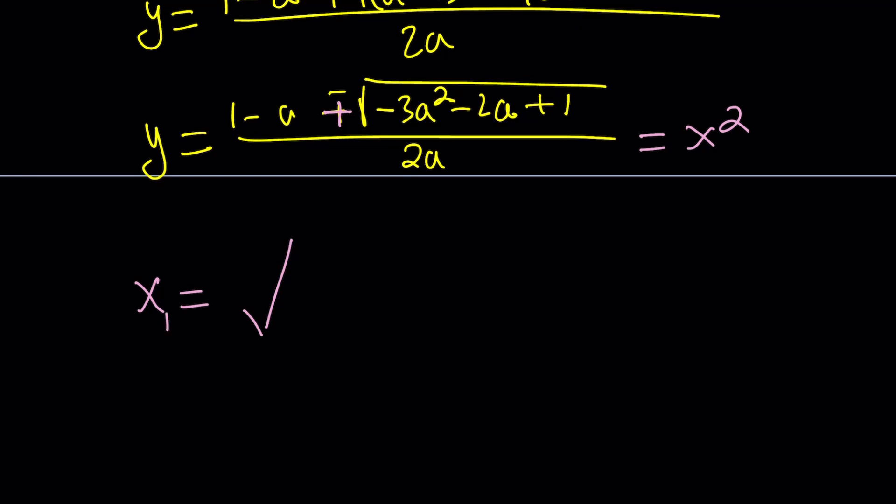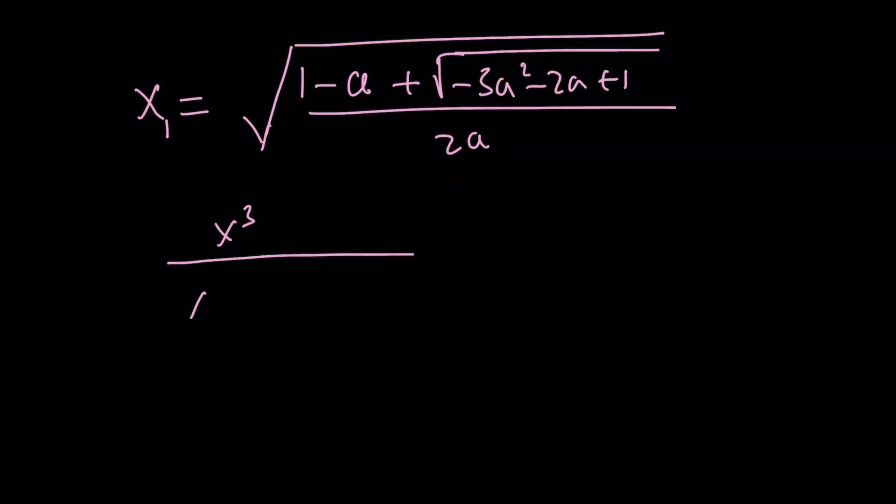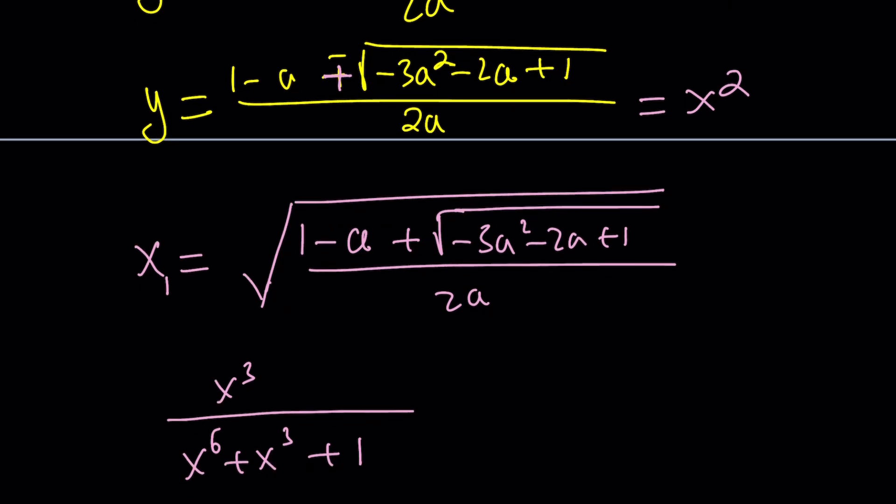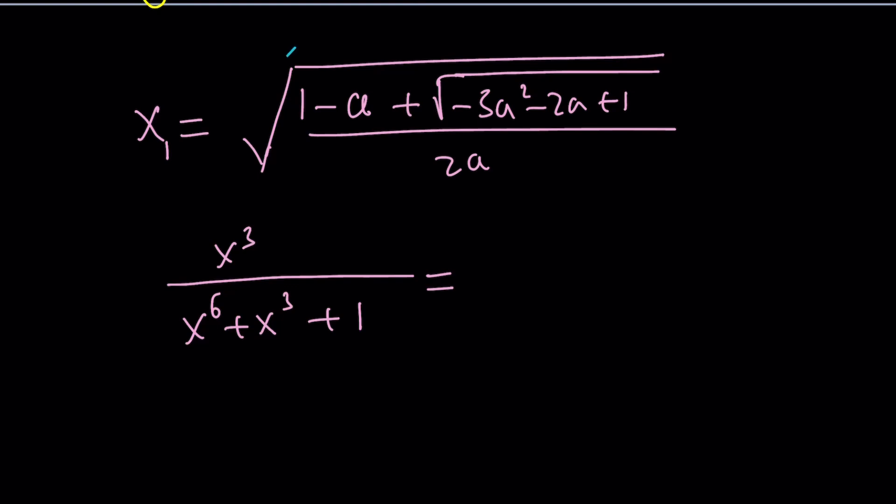And one of these values, you can call it x sub 1 if you want, is going to look like this: the square root of 1 minus a plus the square root of negative 3a squared minus 2a plus 1 all over 2a, and the square root of that whole thing. This is my x value, at least one of the x values. And I'm supposed to evaluate this expression, x cubed over x to the 6 plus x to the 3rd plus 1. If I only had even powers, I could get away with x squared, but I also need x cubed. One thing I can do is take this expression and cube it, and then square it to get the 6th power. Give it a try and let me know how that goes, because I'm just going to skip over to the 2nd method.